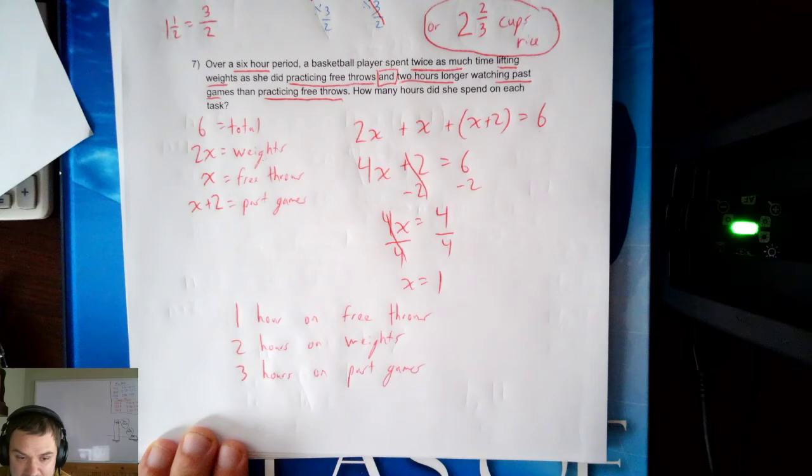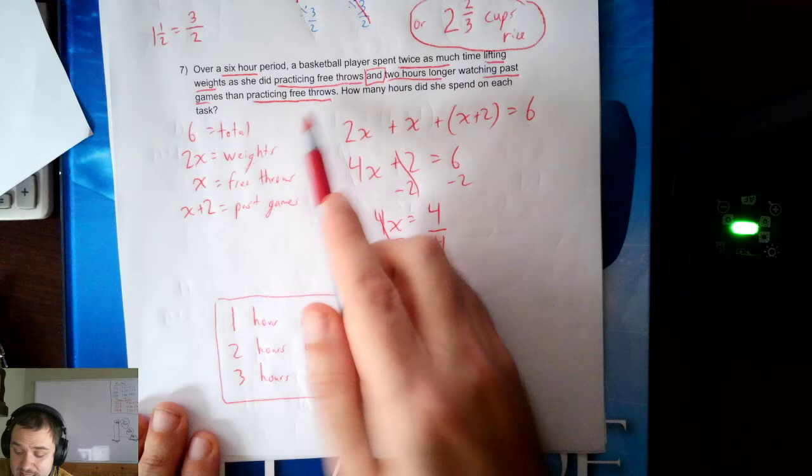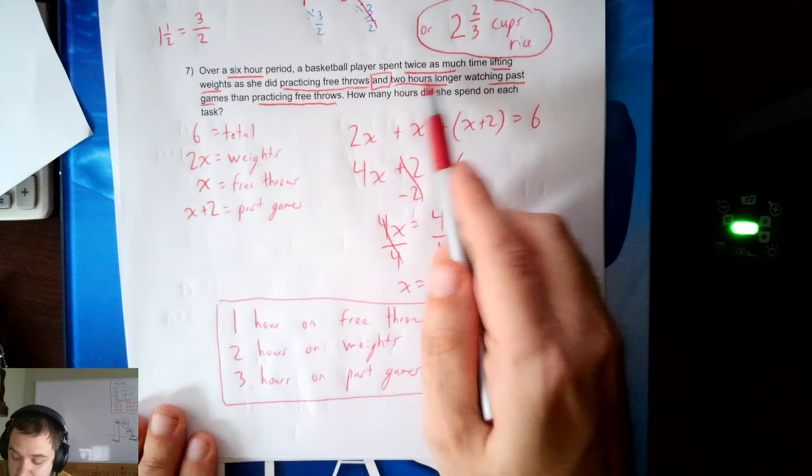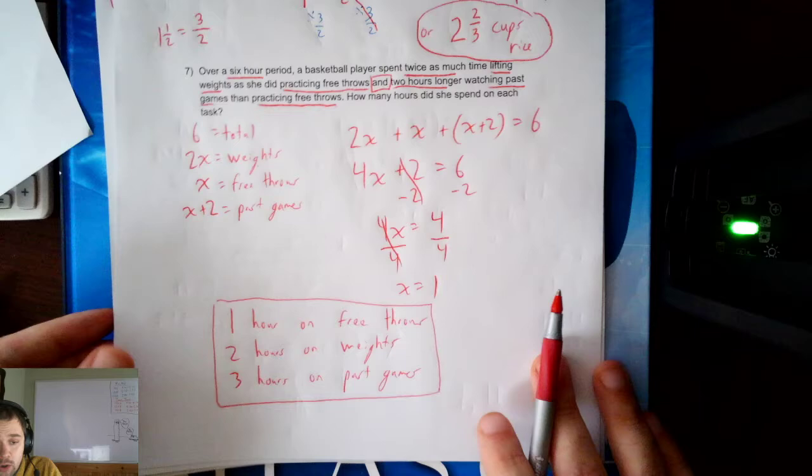Those are the values we want for our answer. So let's box them up. And we know they make sense, because what do they add up to? 1 plus 2 plus 3 is indeed 6 hours total. And they match the relationships. Twice as much time on weights and 2 hours longer on past games than free throws. So I can answer questions with multiple unknowns. I just need to express everything in terms of the same variable.